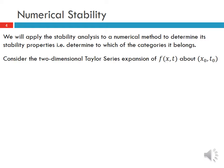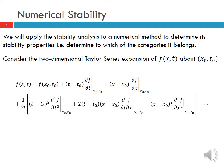Let's start with a two-dimensional Taylor series expansion of our function f(x, t) about the point x₀, t₀. This can be written as: f(x, t) = f(x₀, t₀) + (t − t₀) × ∂f/∂t evaluated at (x₀, t₀) + (x − x₀) × ∂f/∂x evaluated at (x₀, t₀), and so on, with the second-order term appearing here as well.